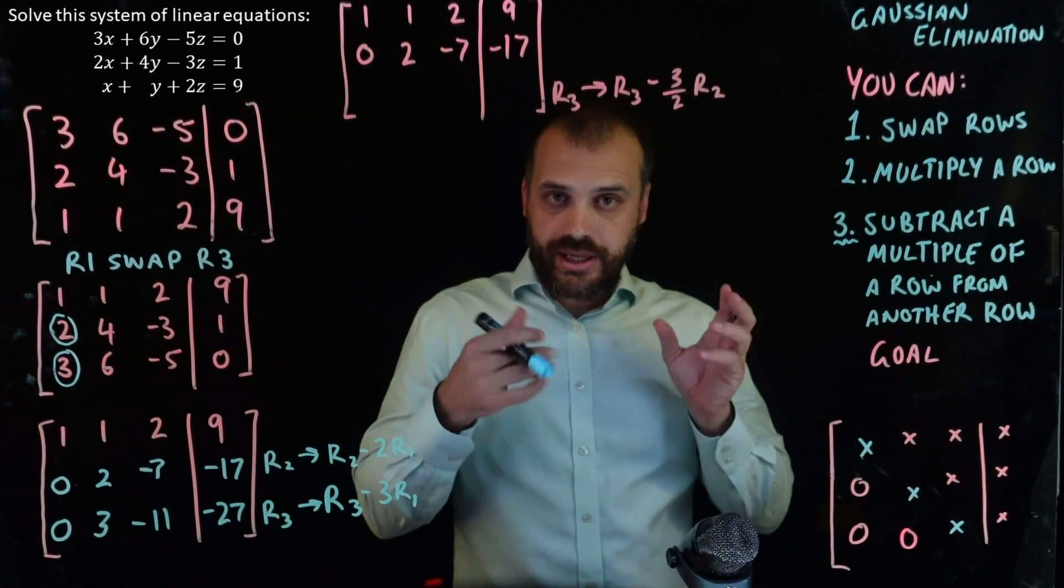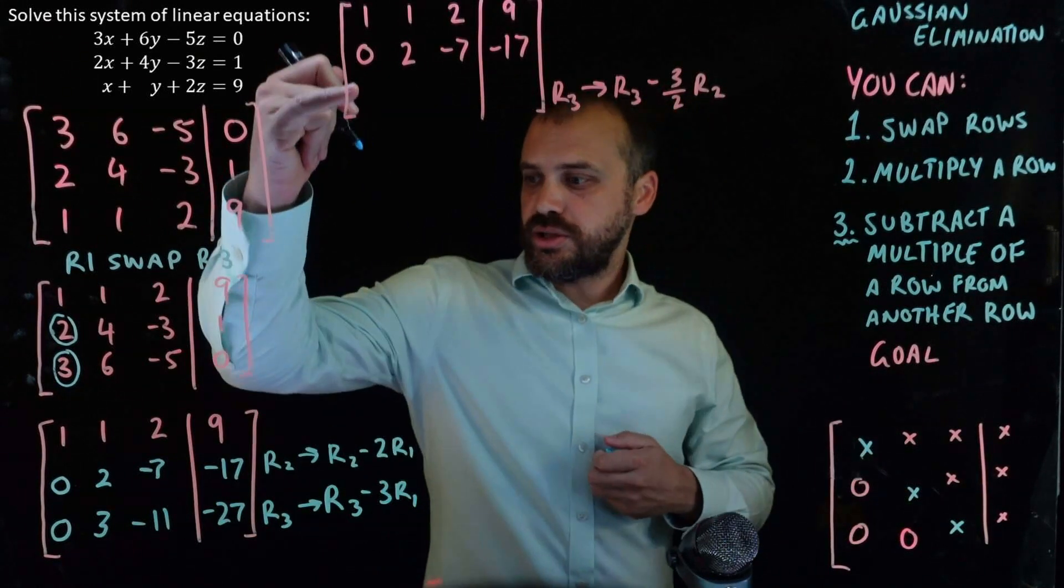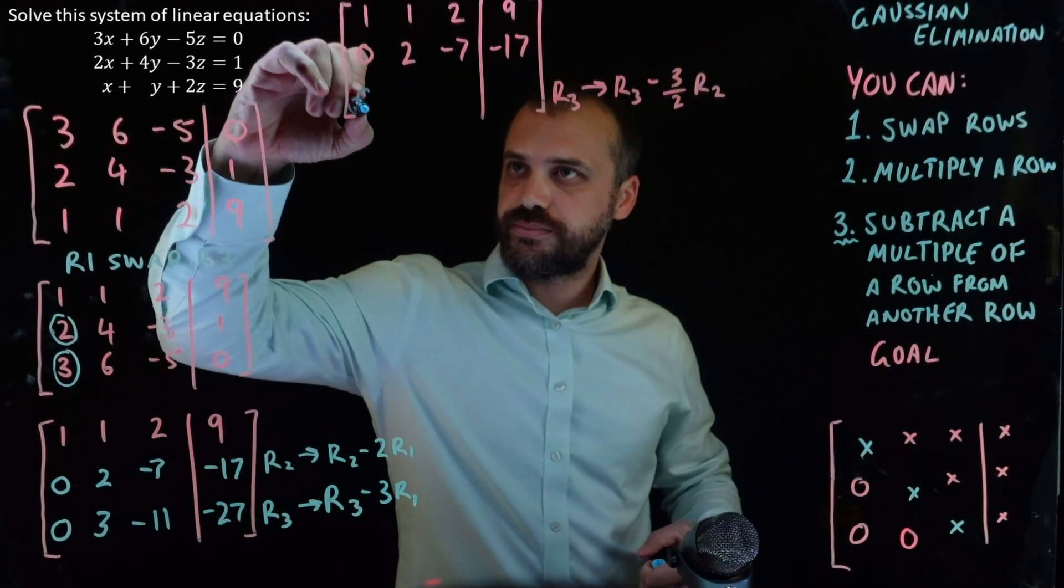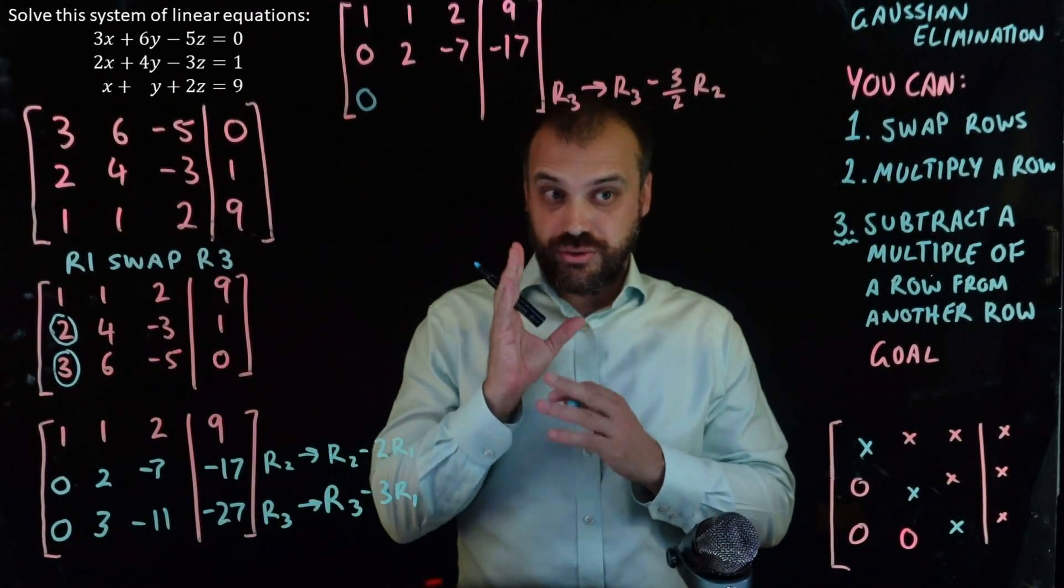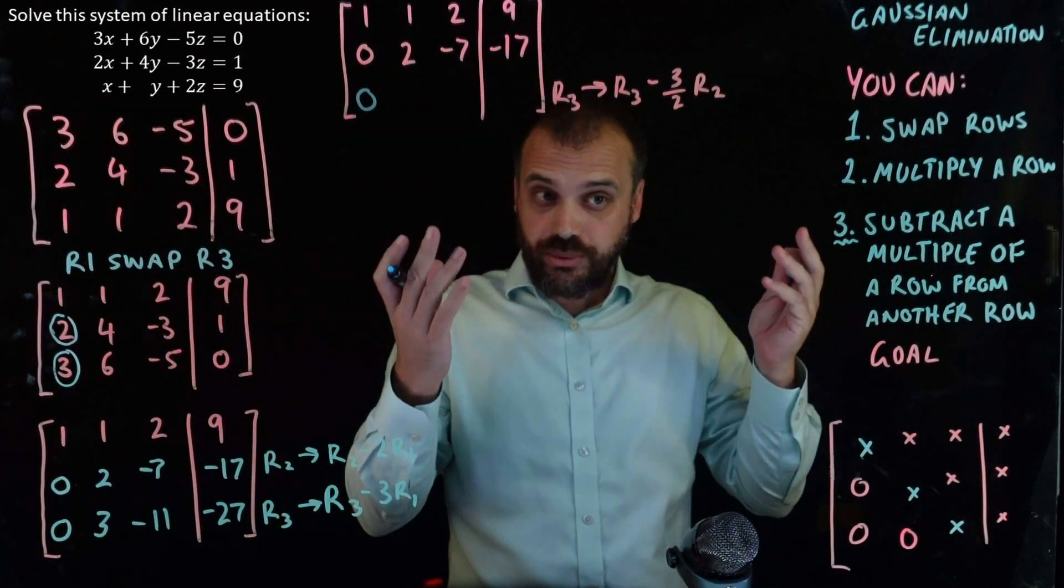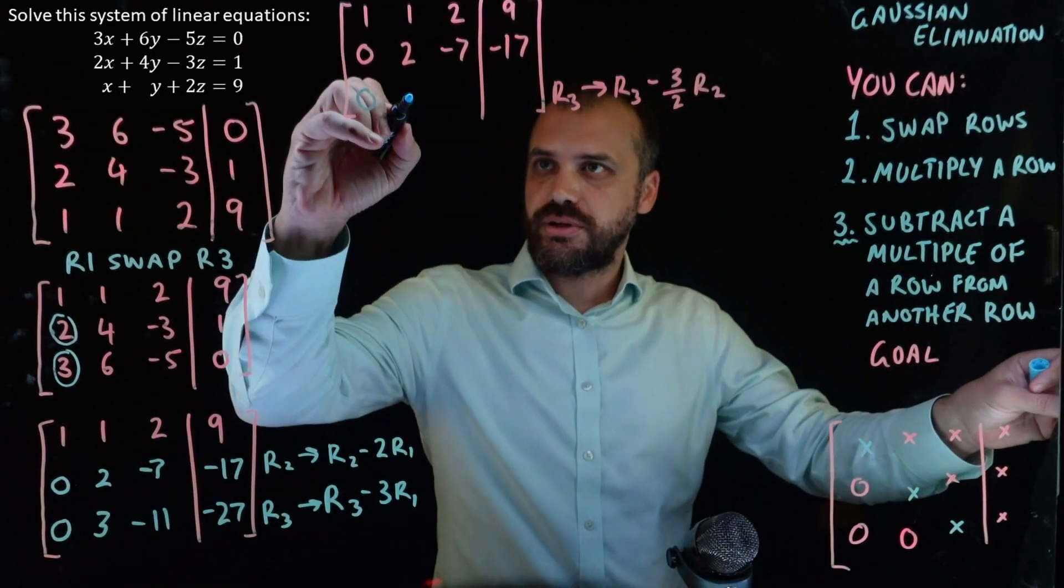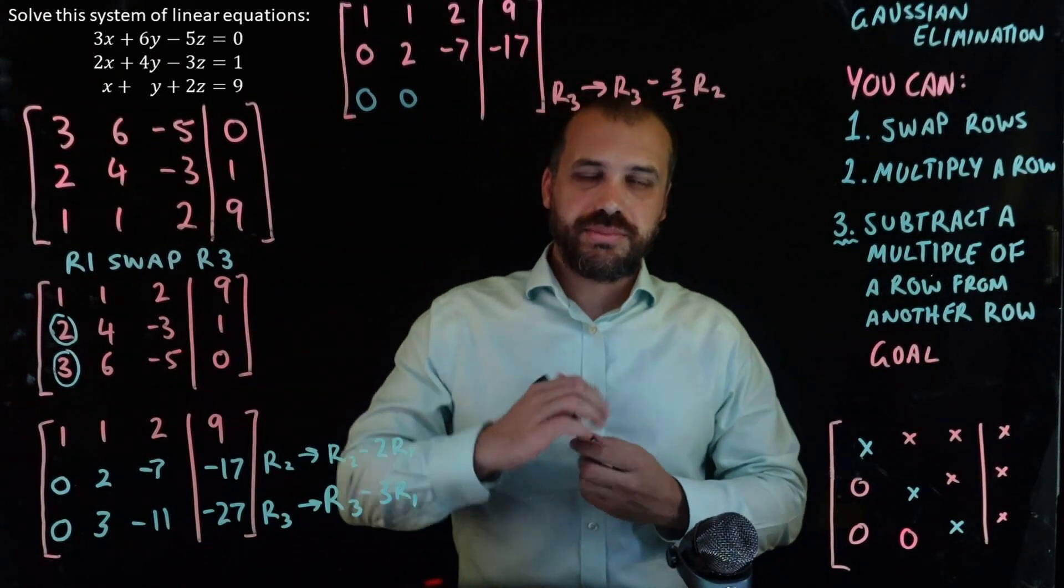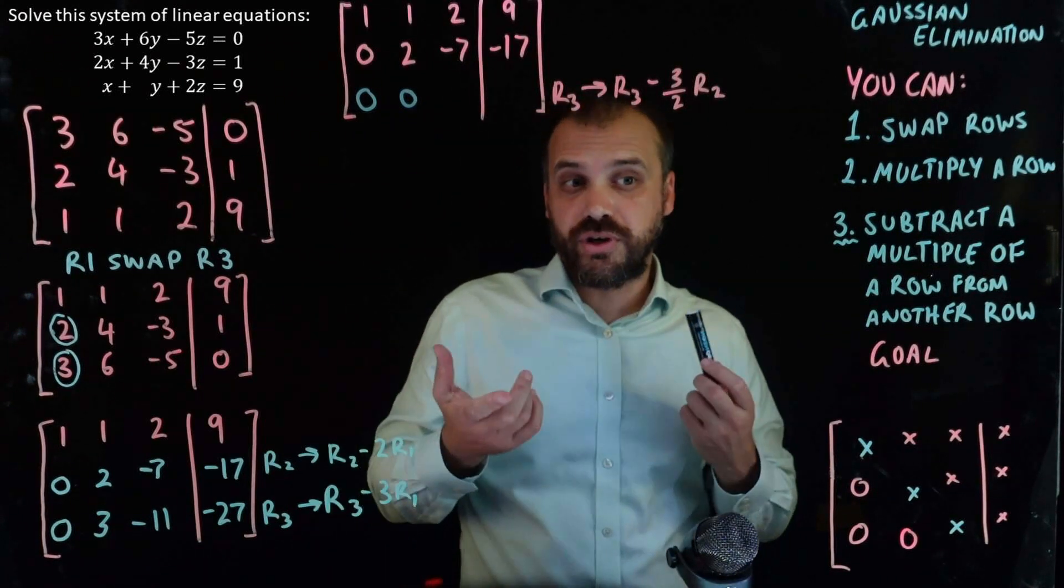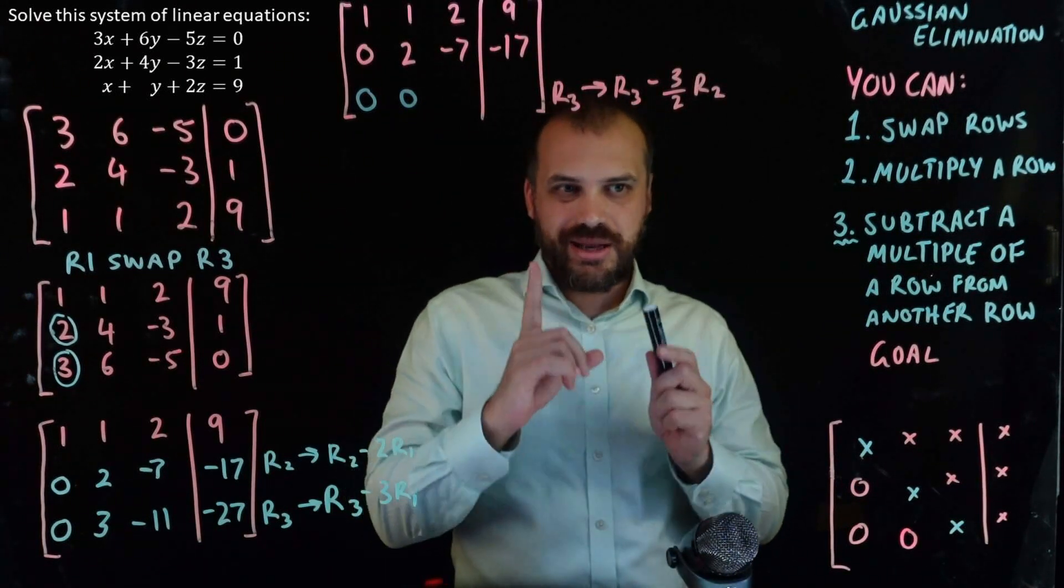Ew. Okay, so how am I going to do this? So, the zero doesn't change. Two times 1.5 is three, because that's why I chose 1.5. So, three minus three is zero. Okay. Negative seven times three times 1.5 is 10.5.